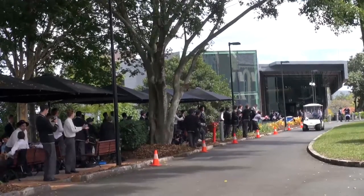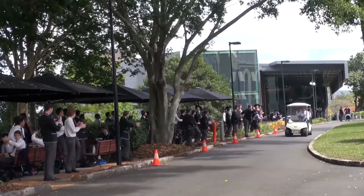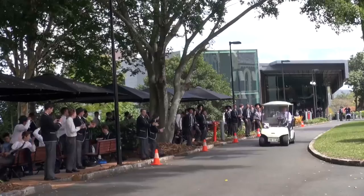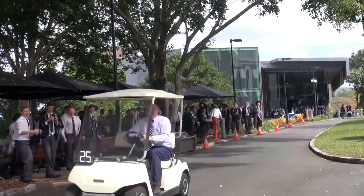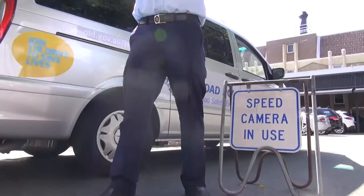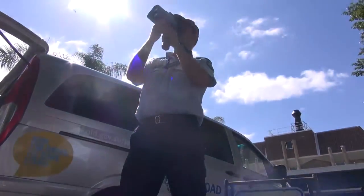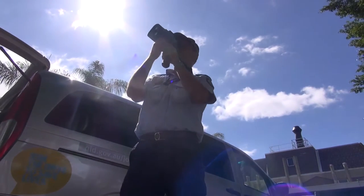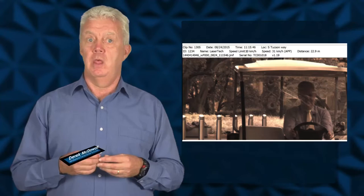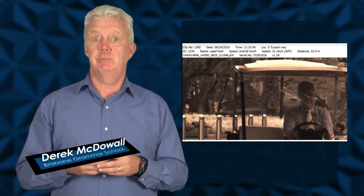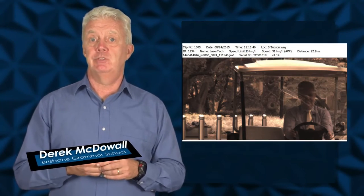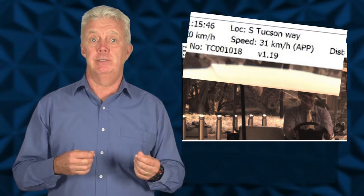On a normal school day, Mr McDowell drives the buggy around the school. On this particular day, a policeman has his speed camera present. The result? Mr McDowell receives a ticket for going at 31 in a 10 km per hour zone.